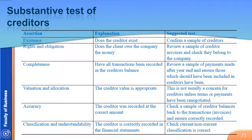The next is completeness, and this is the assertion that could potentially be an issue with creditors, because if companies are under some stress, they may want to hide creditors. The audit objective is to find out whether all transactions have been recorded in the creditors' balances.